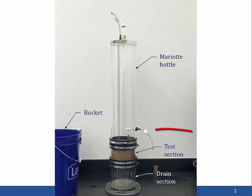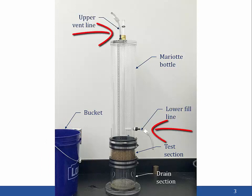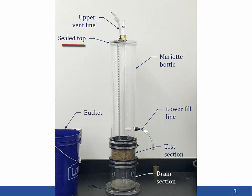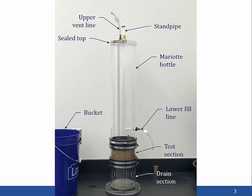The Mariette bottle contains a lower fill line and an upper vent line, used to fill the bottle with water before the test, but kept closed during the test. The top of the Mariette bottle is sealed and an adjustable standpipe sticks down the center of the bottle. The standpipe is moved up and down to control the head of water above the specimen. There is also a scale along the side of the Mariette bottle, used to measure the elevation of the bottom of the standpipe and to measure the drop in water level in the bottle. We will measure the drop in water level over time to compute the flow rate through the soil.